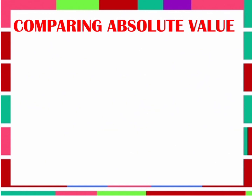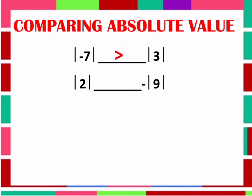Now, let's compare Absolute Values using less than, greater than, or equal. The Absolute Value of negative 7 compared to the Absolute Value of 3: the Absolute Value of negative 7 is 7, and the Absolute Value of 3 is 3. Since 7 is greater than 3, the answer is greater than. Next: the Absolute Value of 2 compared to the negative Absolute Value of 9. The Absolute Value of 2 is 2, and the negative Absolute Value of 9 is negative 9. Therefore, 2 is greater than negative 9.